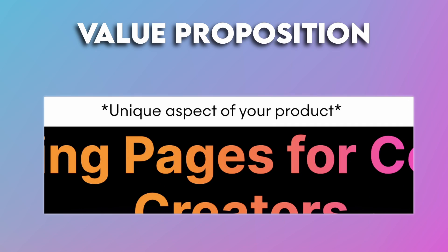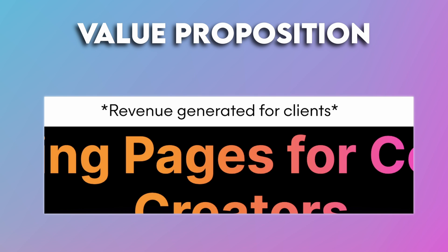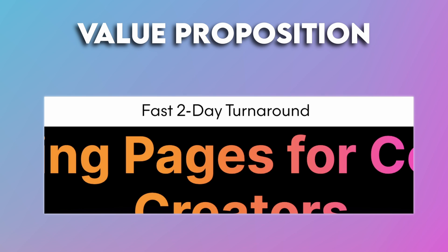Another way you could use your banner is by highlighting your value proposition — include what's unique about your product and why you stand out from competitors. You could use logos of who you've worked with, the amount of revenue you've generated for a certain number of ICPs, something like 'the number one rated service on a platform,' or highlight that you deliver your product or service really quickly in comparison to your competitors — something like a fast two-day turnaround.